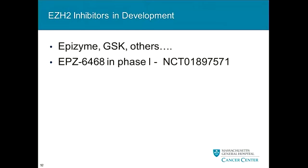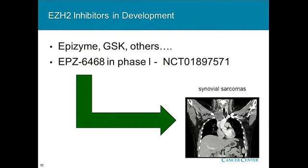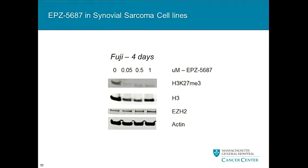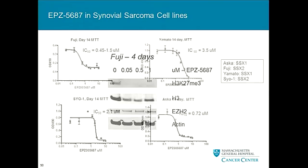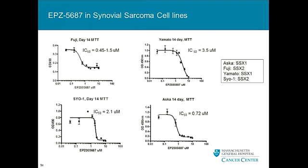EPZ-6438 is in phase one now, but only open in France. We were lobbying hard to get this drug into the United States, but they felt we needed a little more preclinical evidence, which makes sense from a drug development standpoint. Nevertheless, we set up a material transfer agreement with Epizyme and obtained one of their other EZH2 inhibitors, EPZ-5687, to treat our cell lines. Using the Fuji cell line, we could see rapid and nice inhibition of the hypermethylation mark with low doses of drug. When we treated a number of cell lines in culture, we see high nanomolar to low micromolar IC50s, which looks really nice for a tool compound. We also had the hypothesis that there might be differential activity for the different fusion partners — that doesn't appear to be the case so far.